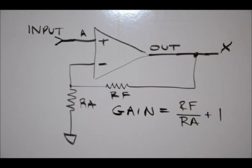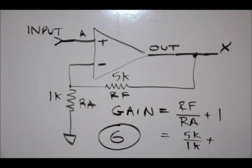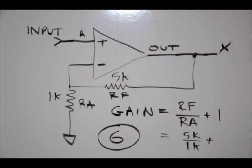So let's give some examples. I've given RF, the feedback resistor, a value of 5 kilo ohms, or 5,000 ohms. I've given RA a value of 1 kilo ohms, or 1,000 ohms. So our gain is 5k over 1k, which is 5, plus 1, equals 6.